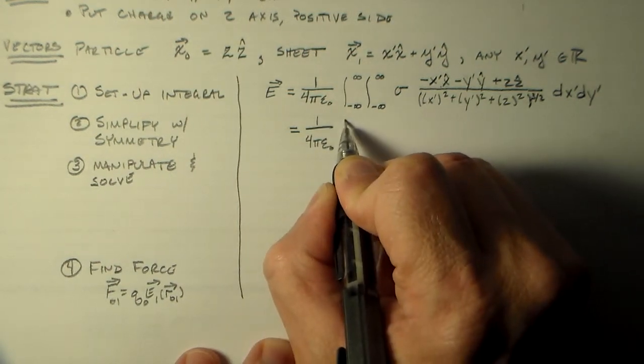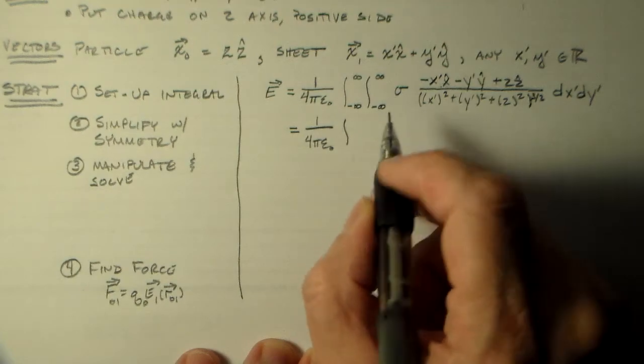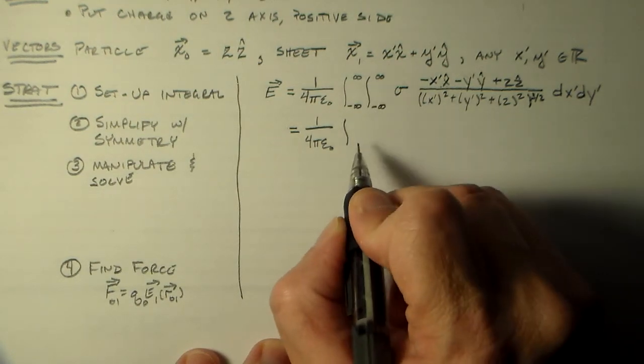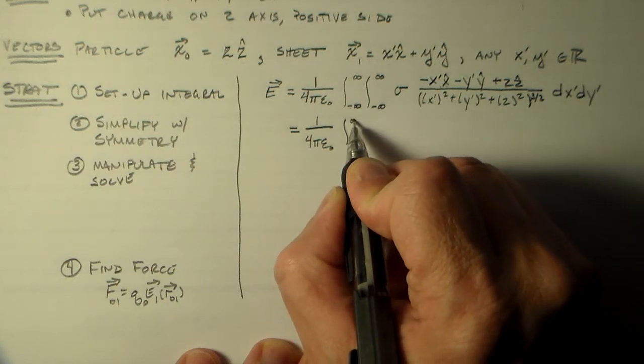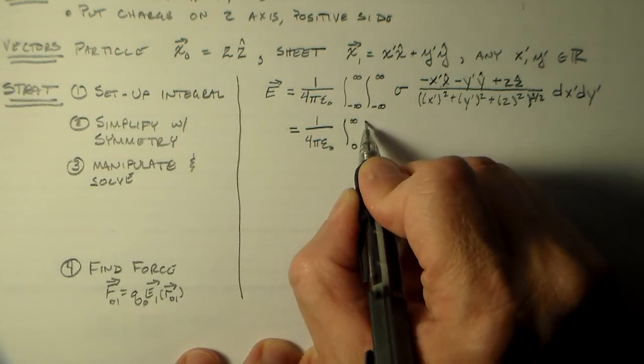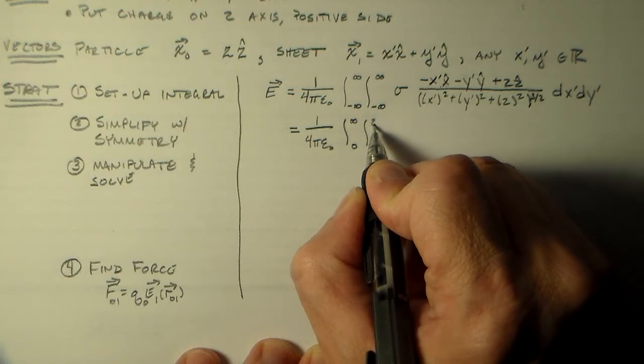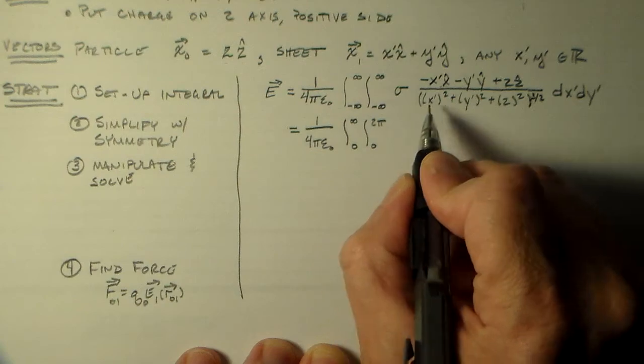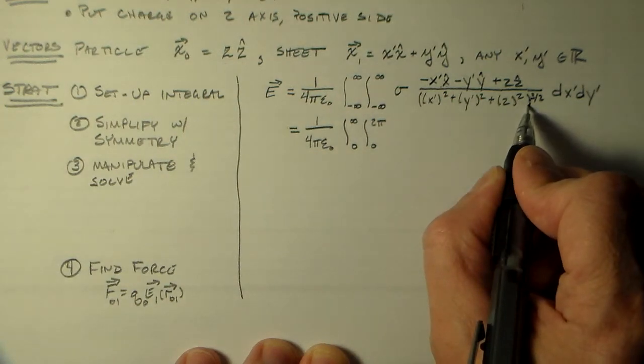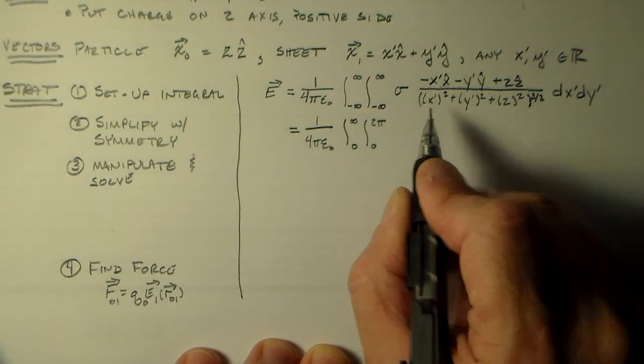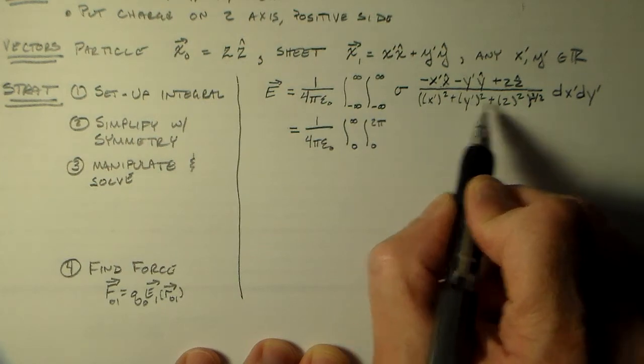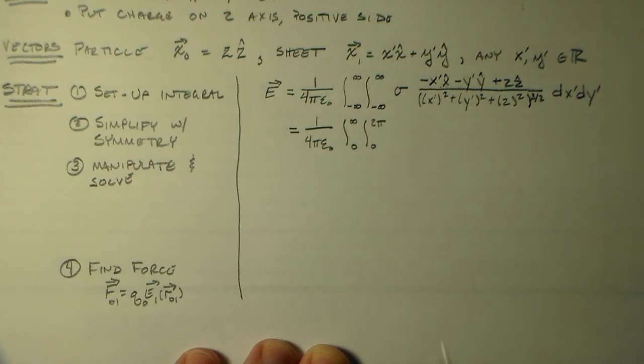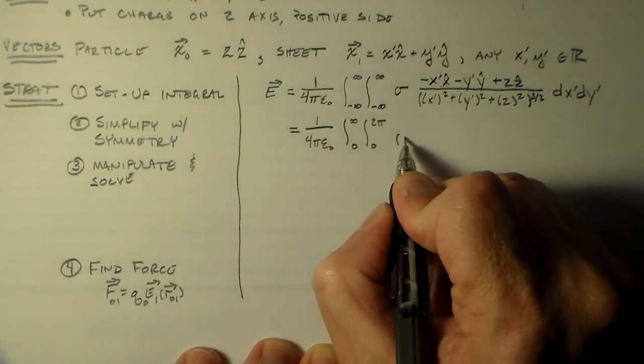We have the same constant, but instead of integrals from minus infinity to infinity in two different directions, we have a radial integral from zero to infinity, and an angular integral from zero to two pi. This distance down here, we switch from X, Y, Z to S, theta, Z.